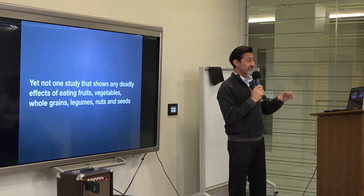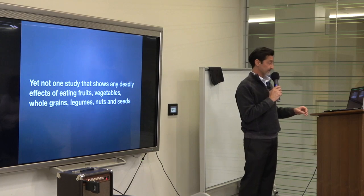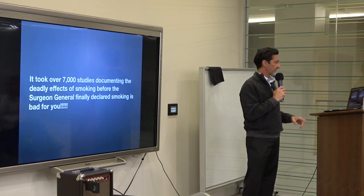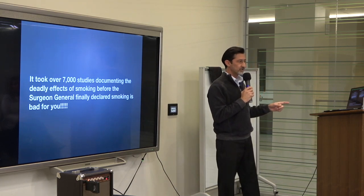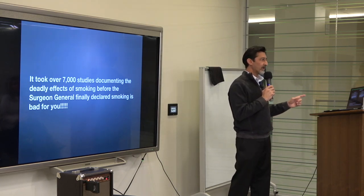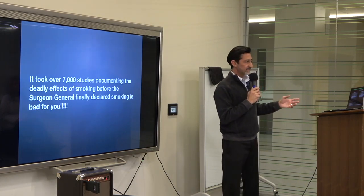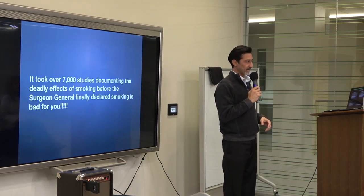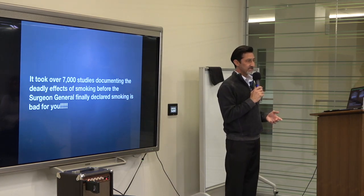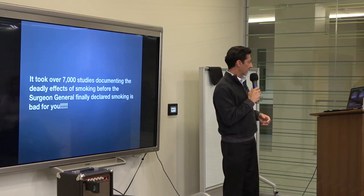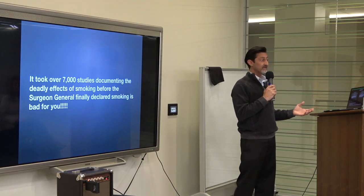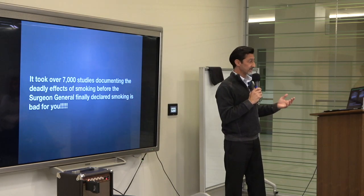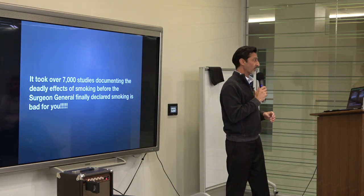There are also thousands of studies that show the benefits of plant-based foods for our health. There's also not one study in the literature, not one, that shows any deadly effects of eating fruits or vegetables, whole grains, legumes, nuts and seeds. But there's plenty of studies that show the deadly effects of eating meat. Here's why I talk about the studies: It took over 7,000 studies before the Surgeon General finally decided to include a warning label on cigarettes. Meat is the new tobacco. We have thousands of studies that show the deadly and ill effects of consuming too much meat. And yet, there's no warning label on meat.